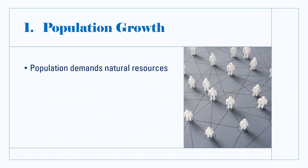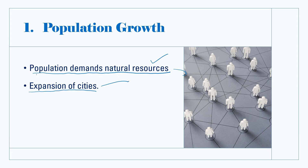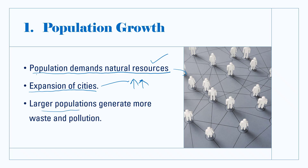Population growth directly affects environmental degradation as people place higher demands on natural resources such as water, food, and energy, leading to overexploitation and depletion. Rapid population growth contributes to the expansion of cities, and natural areas are converted into residential and industrial zones. Larger populations generate more waste and pollution, leading to air and water pollution.